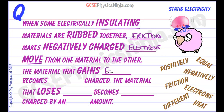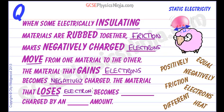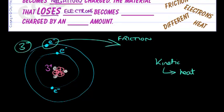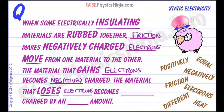The material that gains electrons becomes — well, what charge do electrons have? They're negative. So that material must become negatively charged. The material that loses the electrons — those atoms become unbalanced. And so if they lose electrons, then the nucleus wins, if you like, and the whole atom becomes positive, so that material will become positively charged.